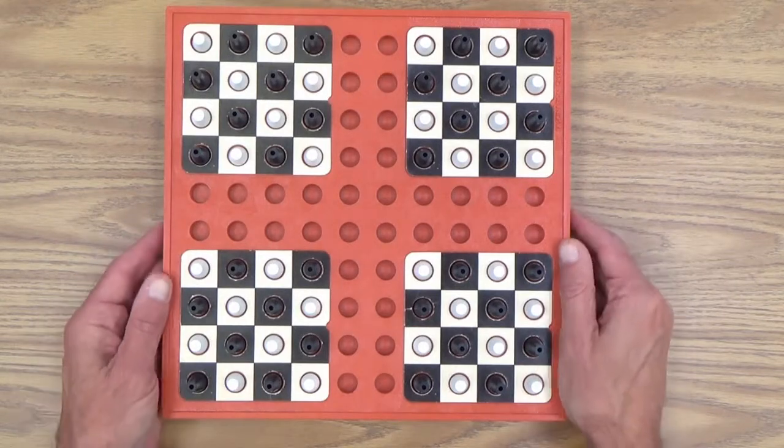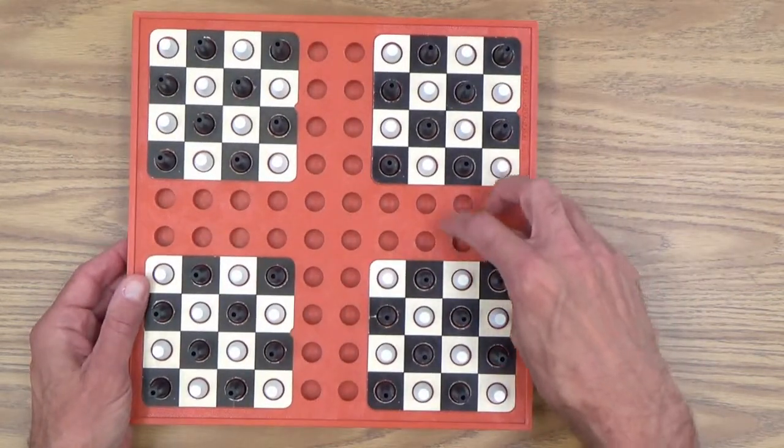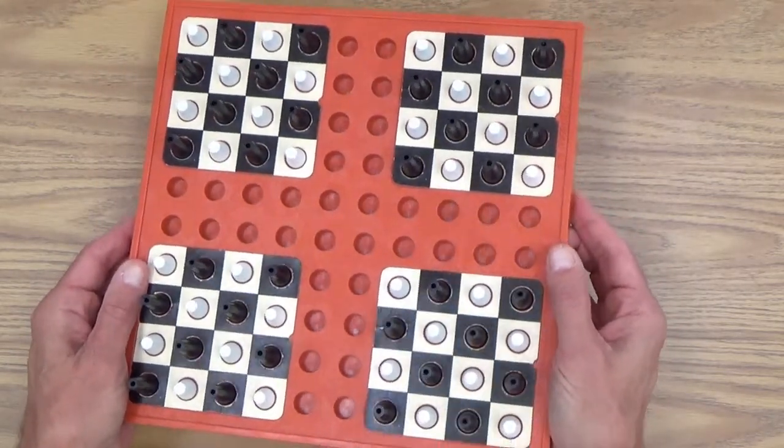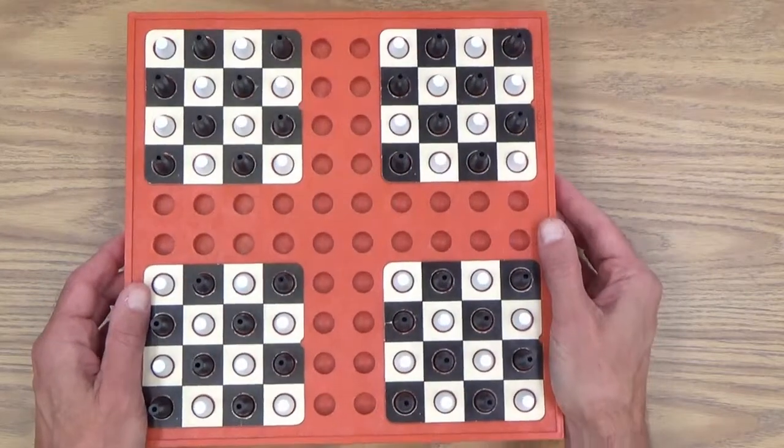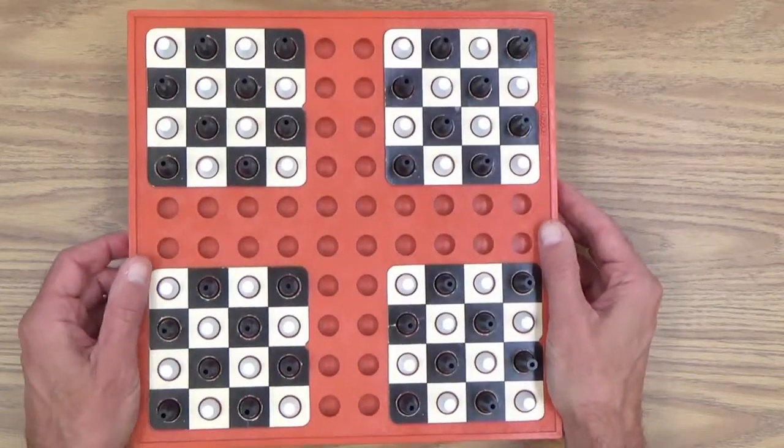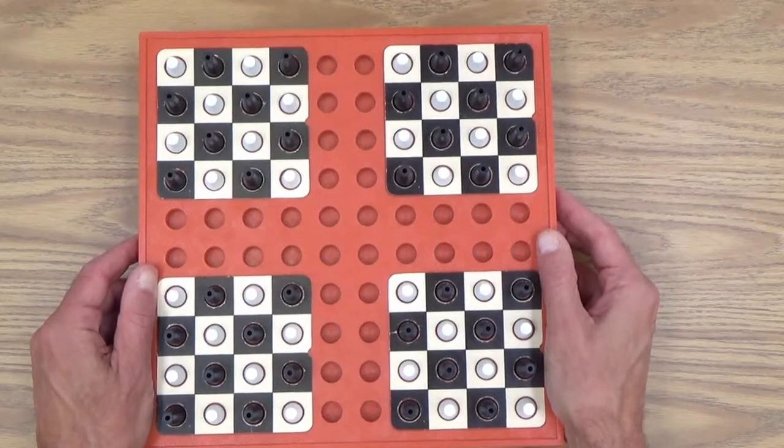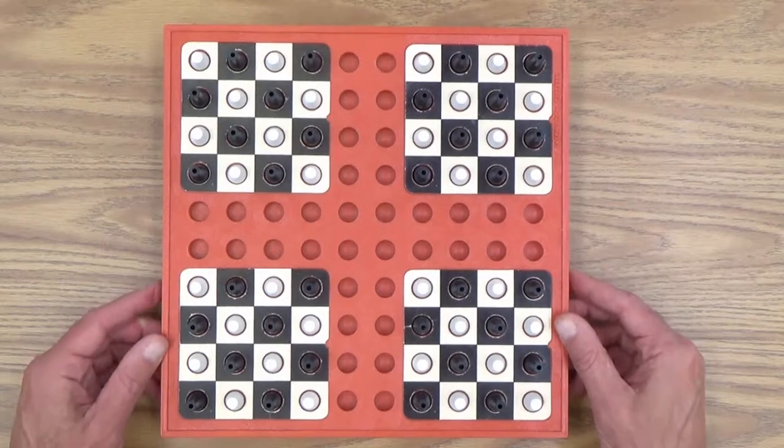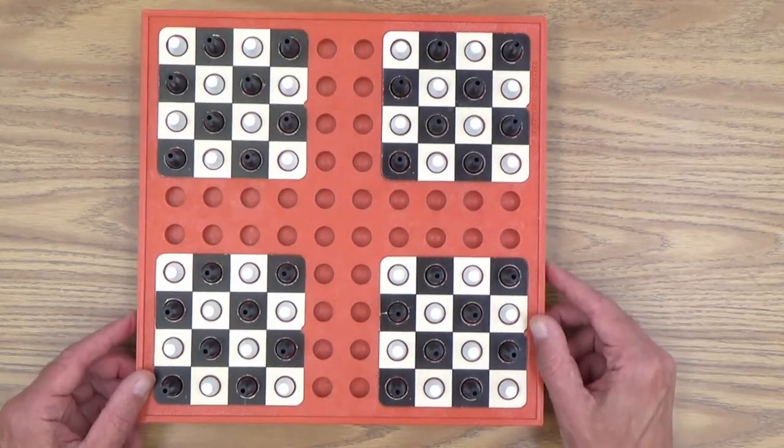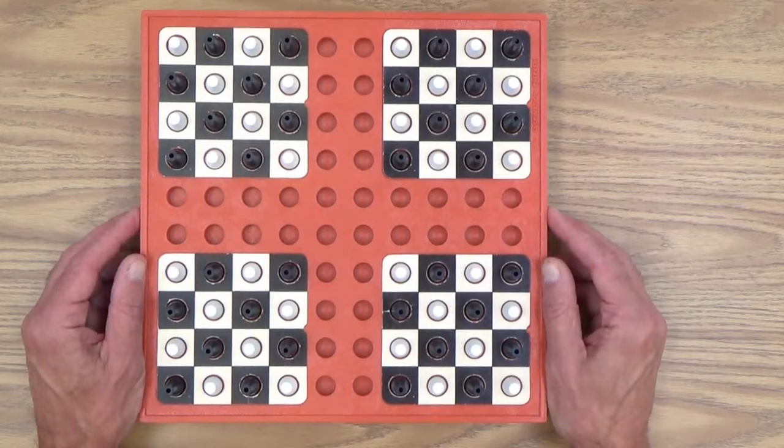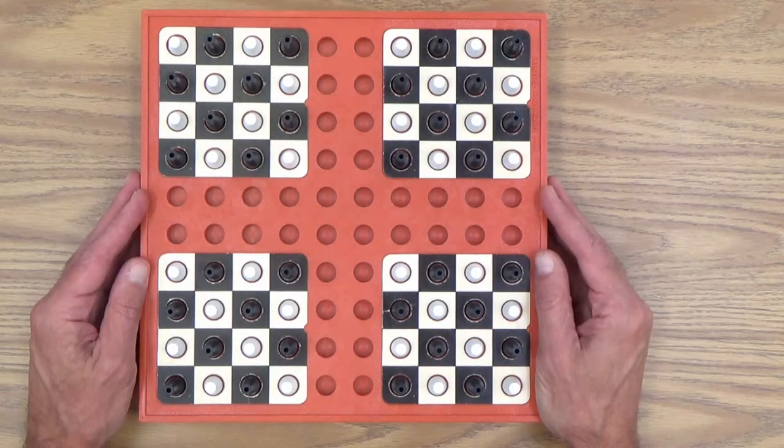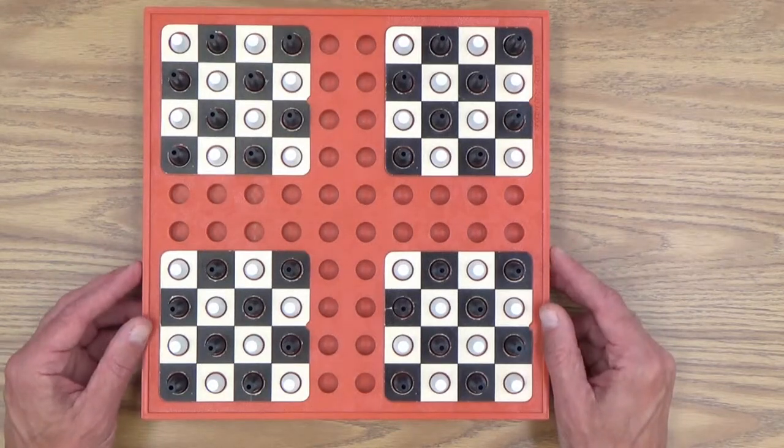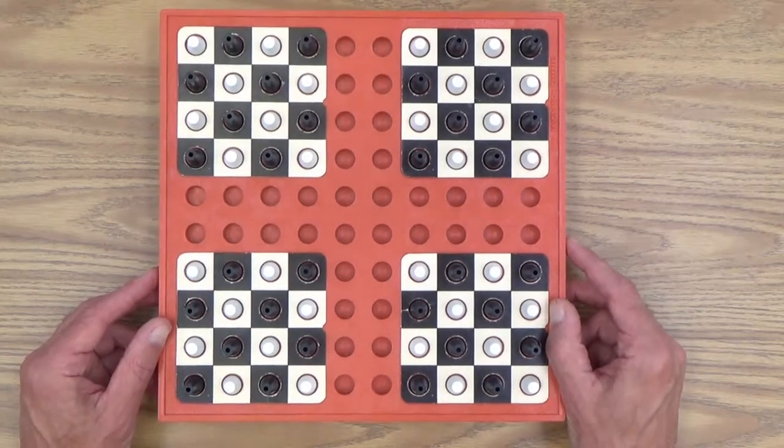However, what's nice about this game is there are little depressions in the board. Let me move this around so you can see that the game pieces fit into. So if you're playing with a child, sometimes they can bump the board and knock all the pieces around. You can't do that with this game. It's very stable. So that's one thing I like about it. And like I said, it's a two-person game and this particular game, each player has 32 pieces to work with.